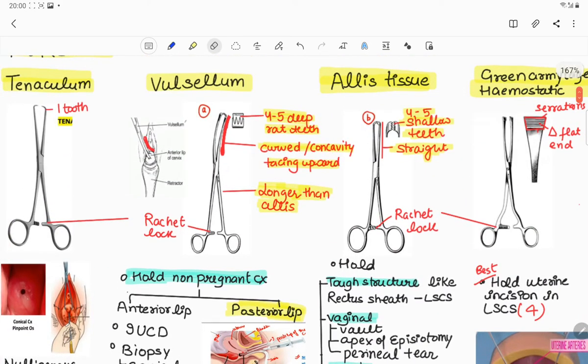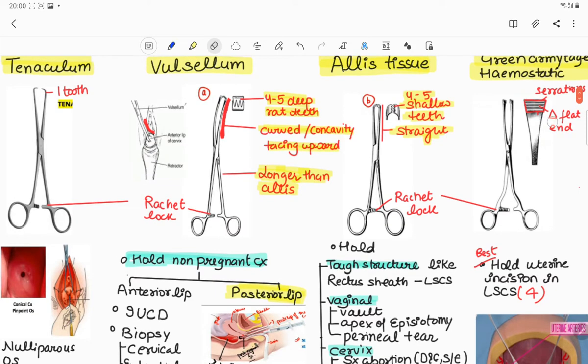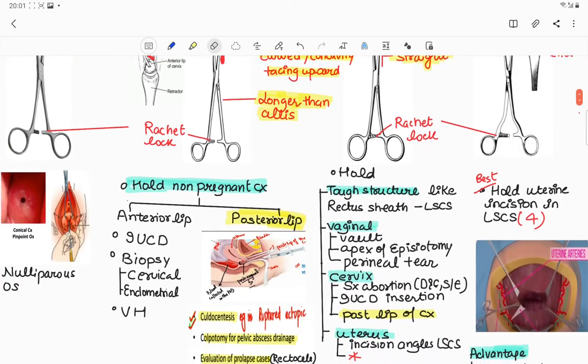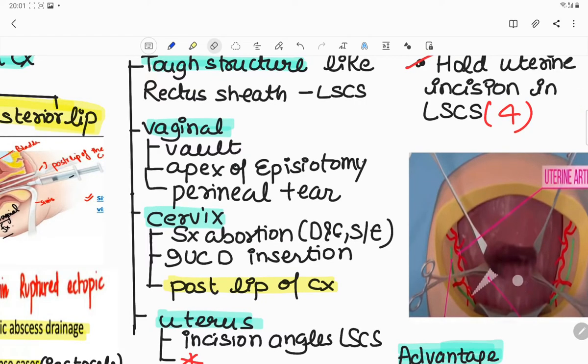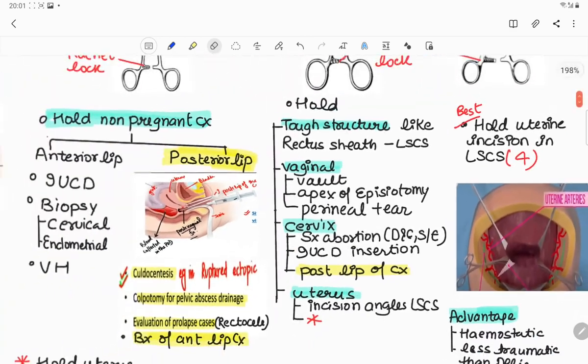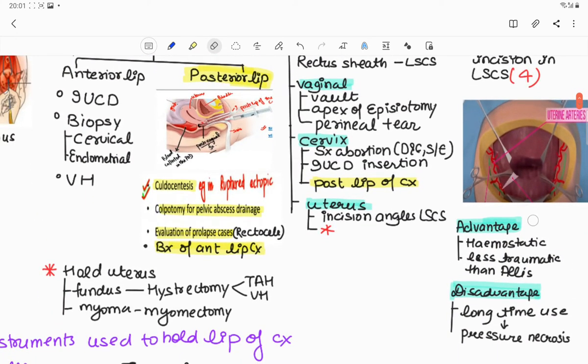Number four is Green Armytage hemostatic forceps. It is triangular and contains a flat end with serrations at the end. If question is asked which is the best forceps to hold the uterine incision during cesarean section, the answer will be Green Armytage hemostatic forceps. Four Green Armytage forceps are used to hold the uterine incision. The advantages are it is hemostatic and less traumatic than Allis, but it can cause pressure necrosis on longer use, so we have to use it wisely.